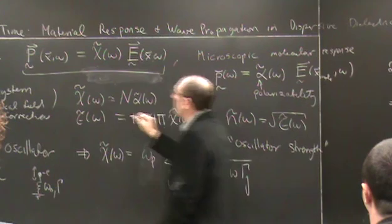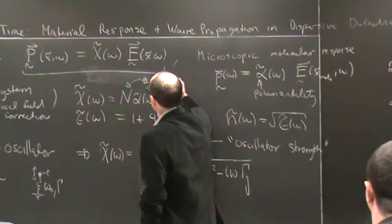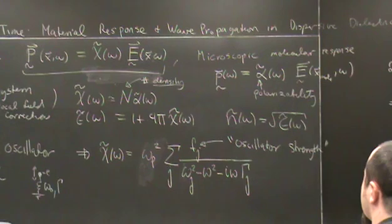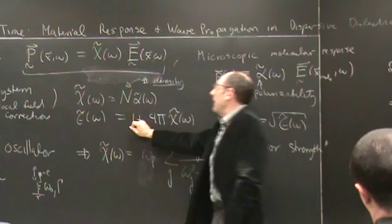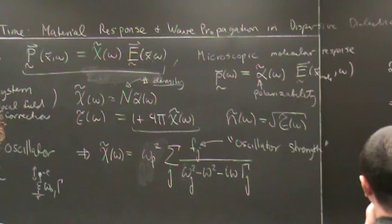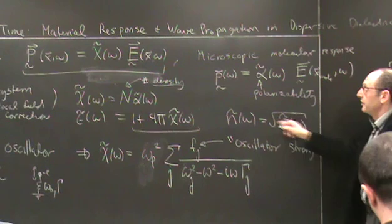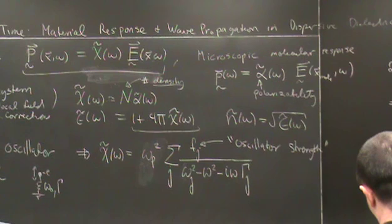When we have a sufficiently dilute sample, we can write a simple model: there's some number density of molecules or atoms, and we just multiply the polarizability times the density. That gives us the dielectric response. The permittivity is then derived from that, and we simply calculate the complex index of refraction at a given frequency.